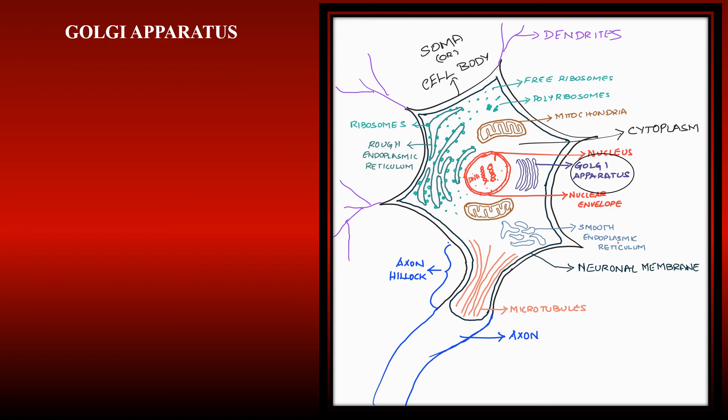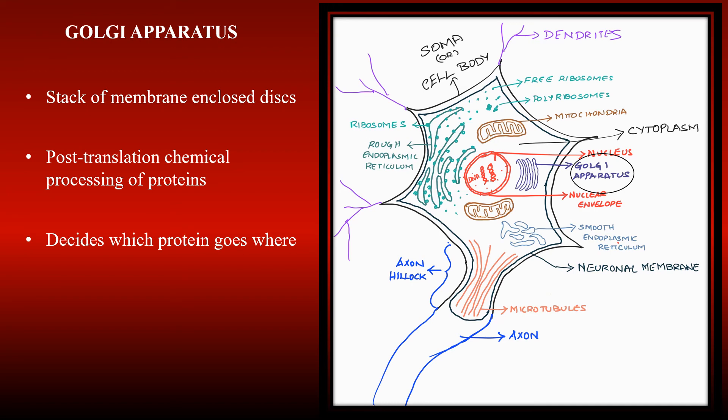There are another stack of membrane-enclosed discs in the cytoplasm called the Golgi apparatus. They are involved in post-translational modification of the proteins. They then prepare these proteins and segregate which protein goes where in the neuron.